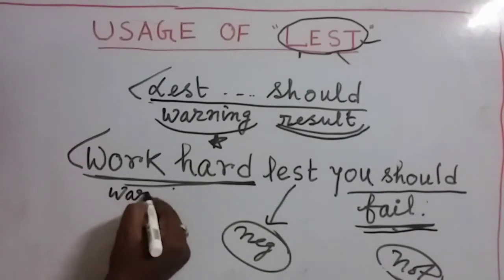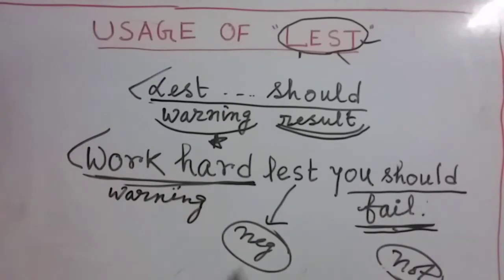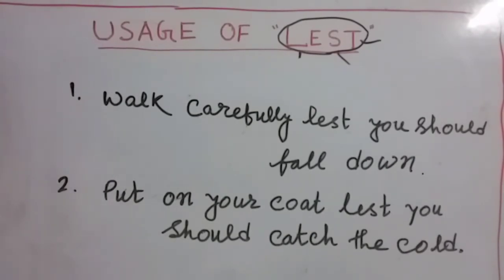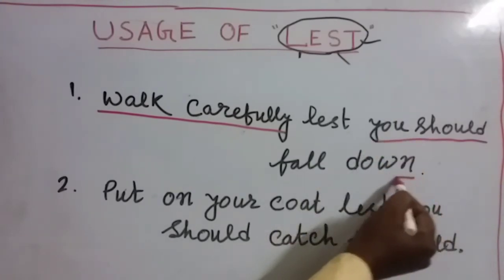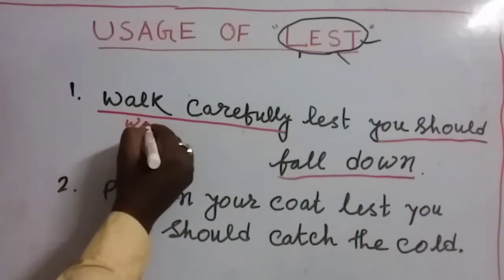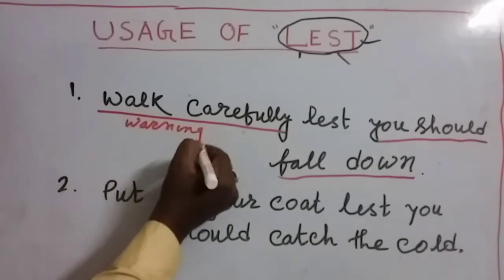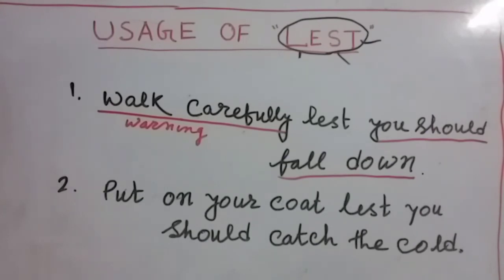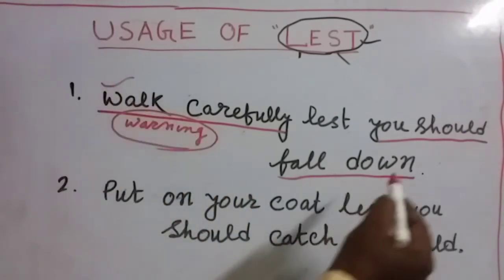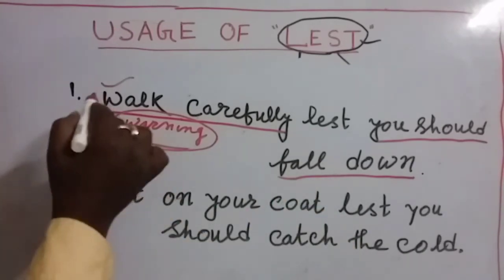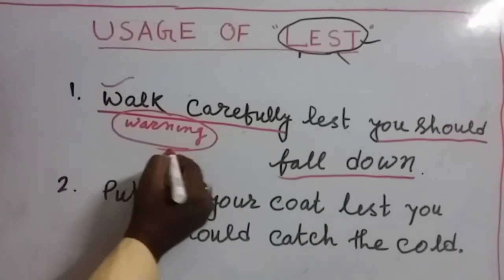Now I have written two more examples. In the first one: 'Work carefully lest you should fall down.' This is the warning — work carefully — and the consequence is falling down. That means if you do not work carefully, you will fall down. This is the warning and this is the result.